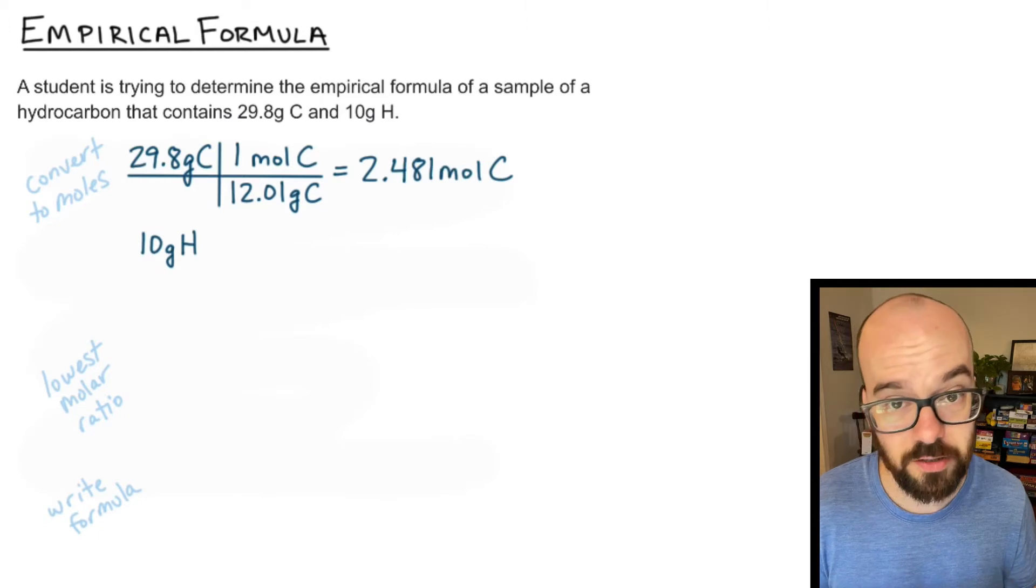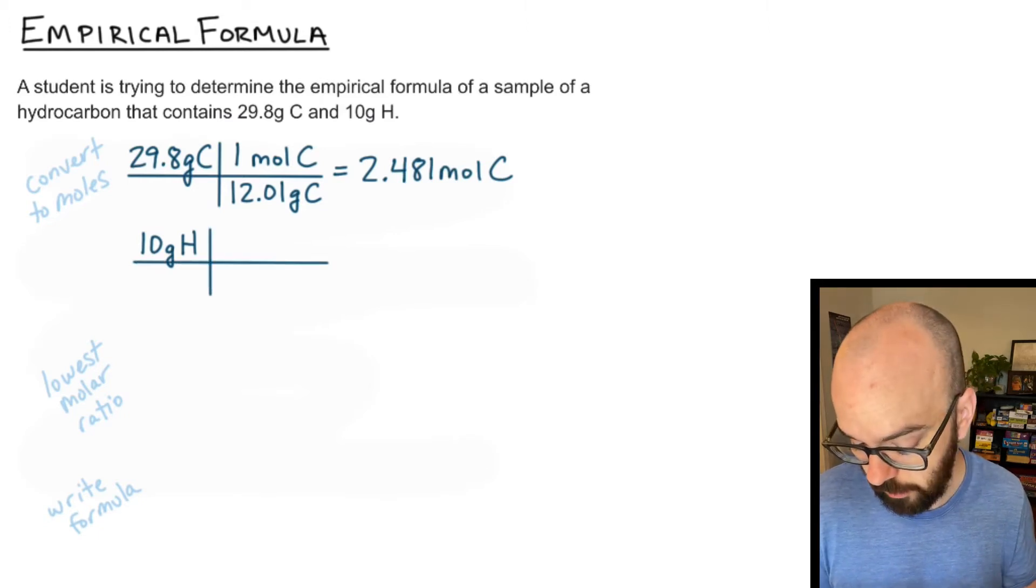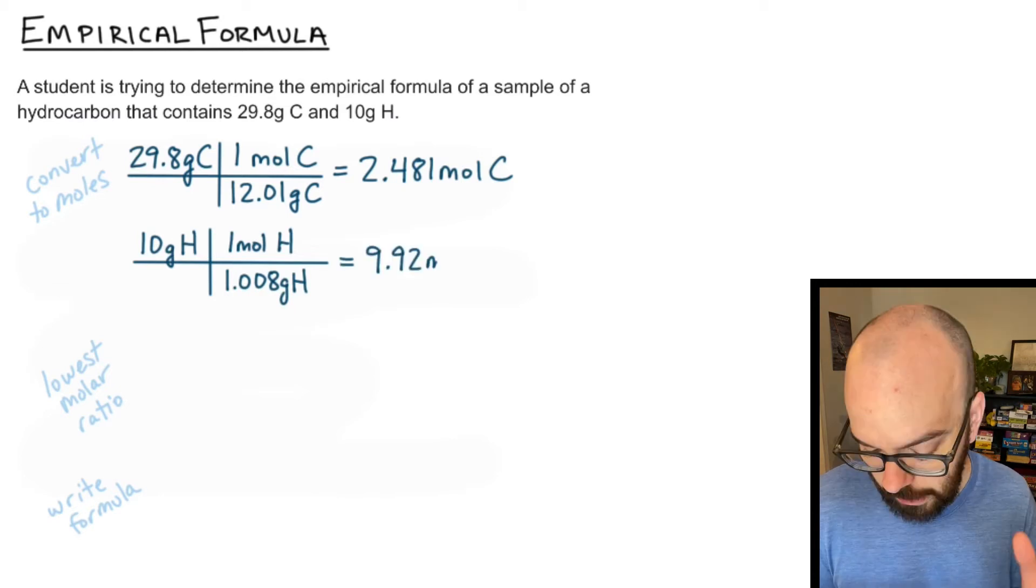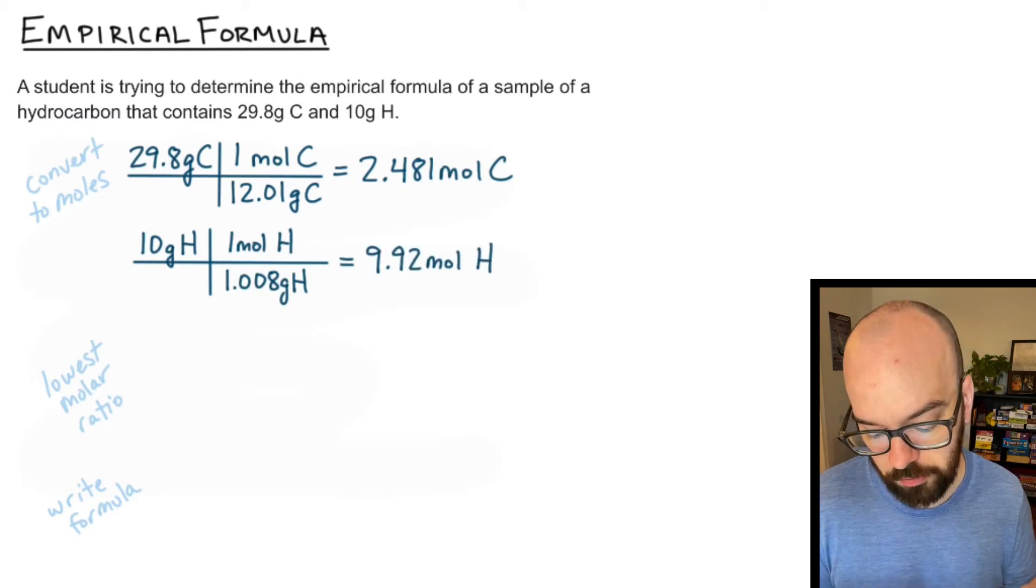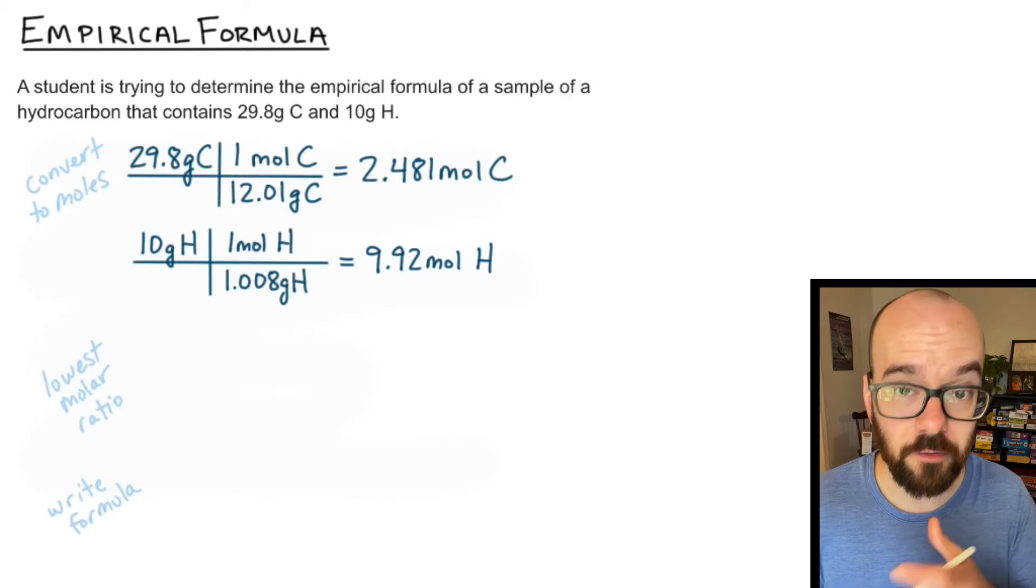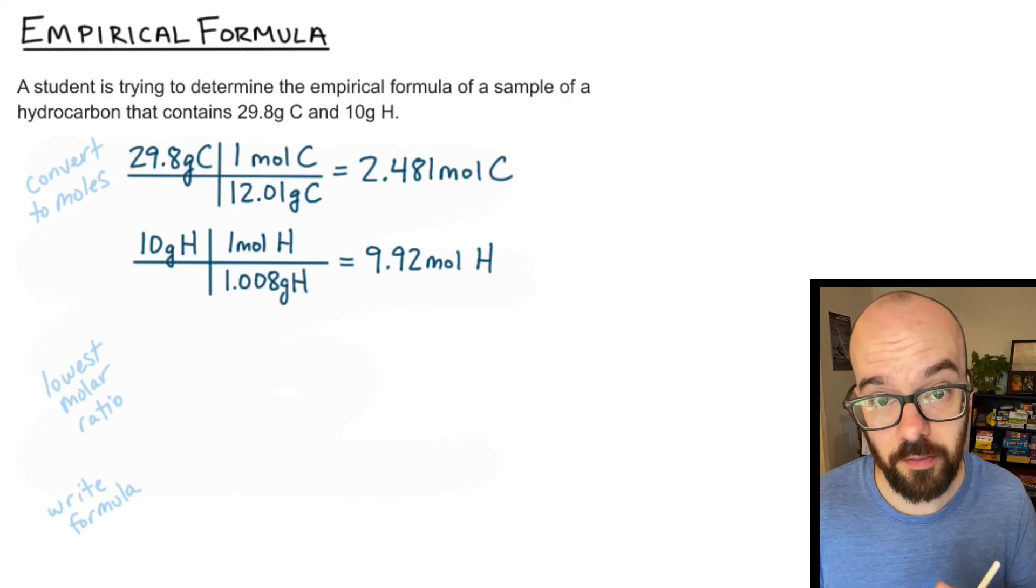I'm going to do the same thing for hydrogen. 10 grams of hydrogen, set up my t-chart. 1.008 grams of hydrogen is on the bottom per one mole and I get 9.92 moles of hydrogen. If you need to review how to convert from grams to moles I've got a video on that.